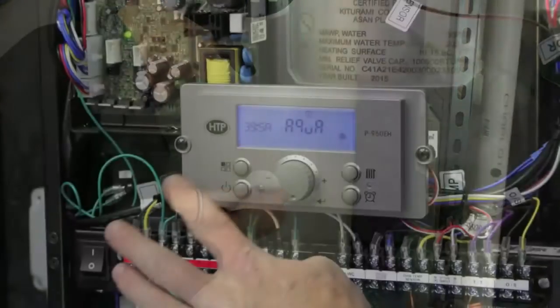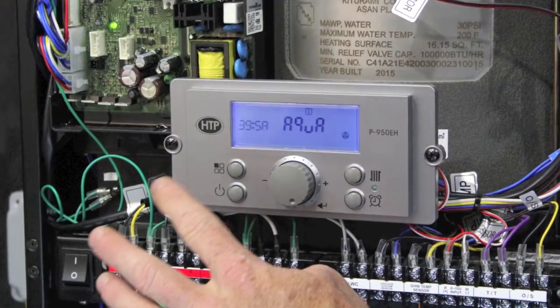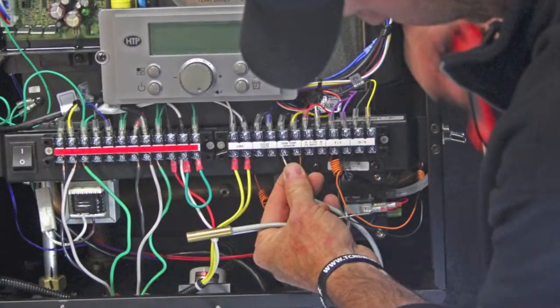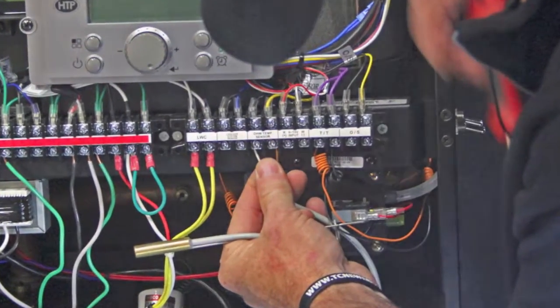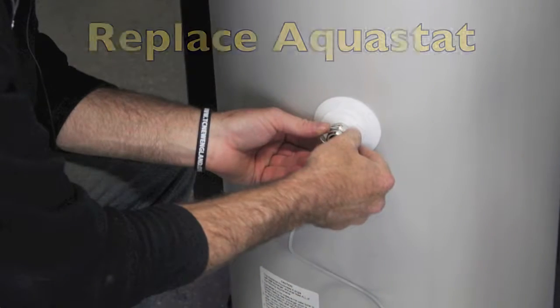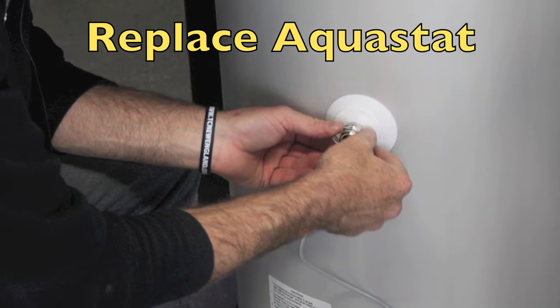If Aquastat is selected in installer mode parameter 39, then ensure proper wiring connections to the designated terminals on the low voltage terminal strip. Ensure proper connections at the Aquastat. After proper connections have been verified, replace the Aquastat.